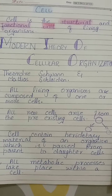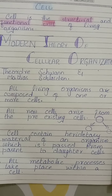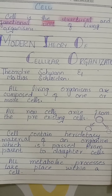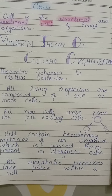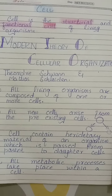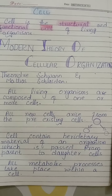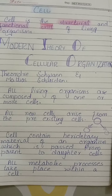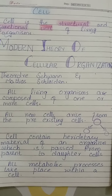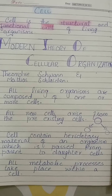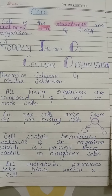جتنی بھی پرانی cells ہیں وہ ایک خاص level تک پہنچ کے divide ہوں گی اور daughter cells دیں گی. یہ daughter cells اپنے ساتھ parent cell سے DNA اور RNA کو transfer کریں گی جو hereditary material ہے اور ہماری characters کو determine کرتا ہے. Hereditary material کو parent سے offspring میں لے کر جاتا ہے. اور next ہے: all metabolic processes take place within a cell — جتنی بھی energy producing processes ہیں وہ cellular level پہ ہوتے ہیں.